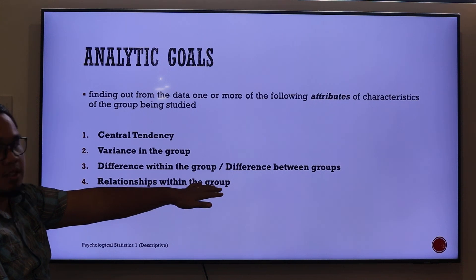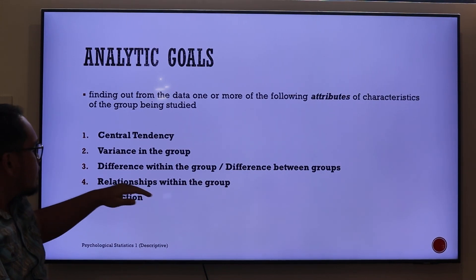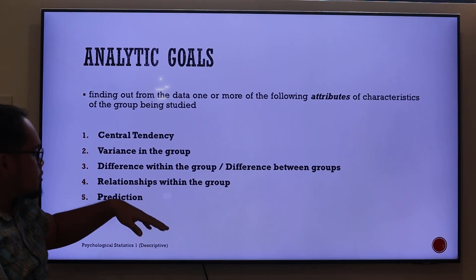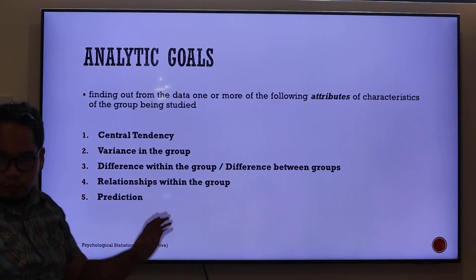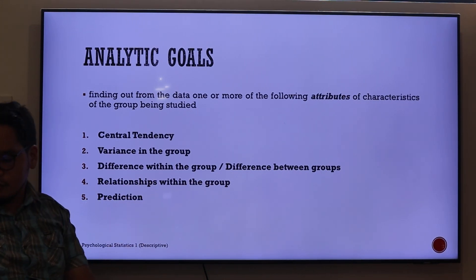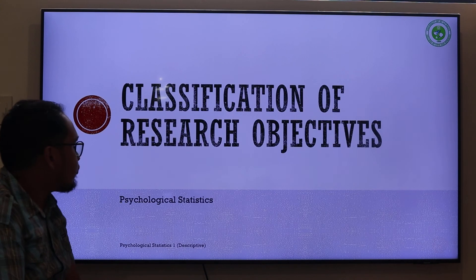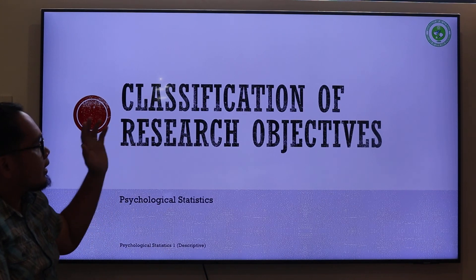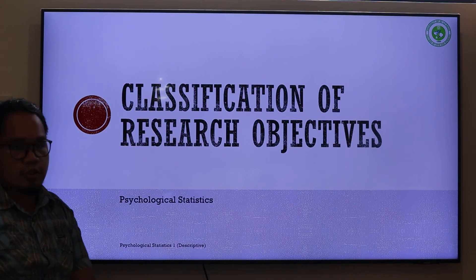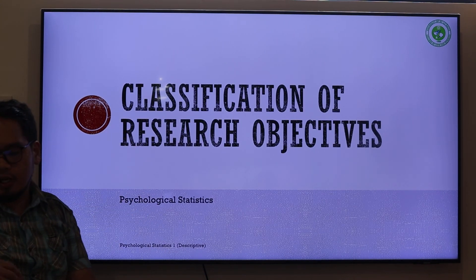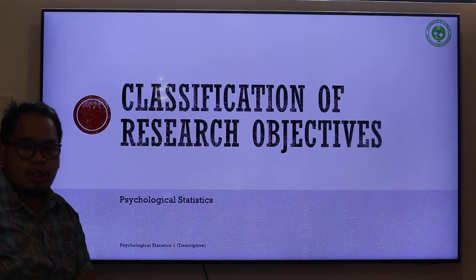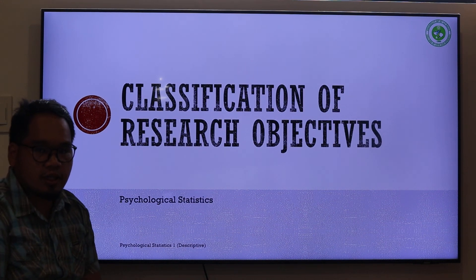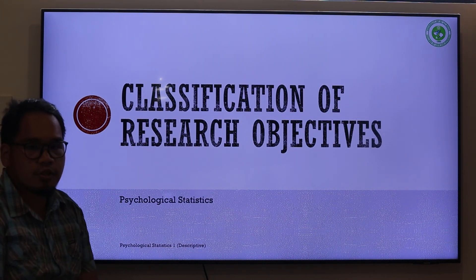To recap, our five analytic goals or classification of research objectives are: central tendency, variance in the group, difference within and between groups, relationships within the group, and prediction. That ends our video on the classification of research objectives. See you in the next video — thank you very much.